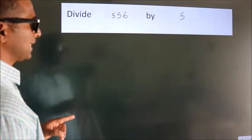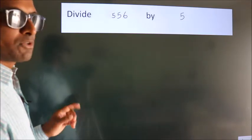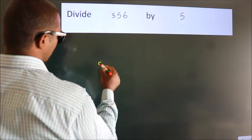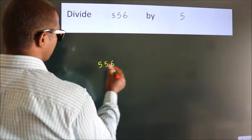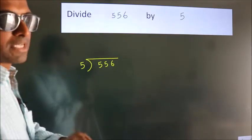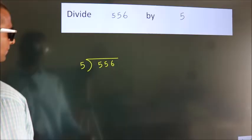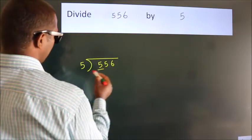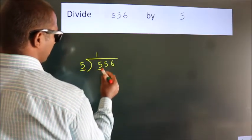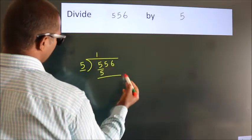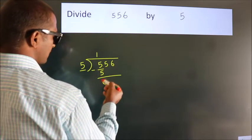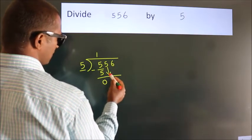Divide 556 by 5. To do this division we should frame it in this way: 556 here, 5 here. This is your step 1. Next, when do we get 5 in the 5 table? 5 once is 5. Now we subtract — we get 0.